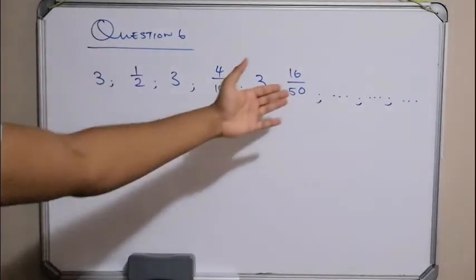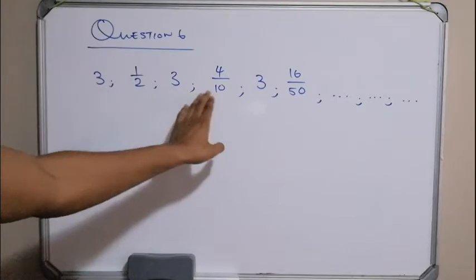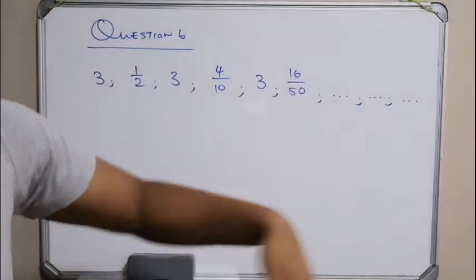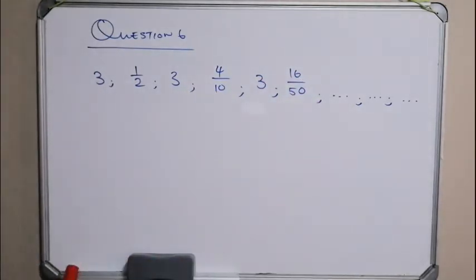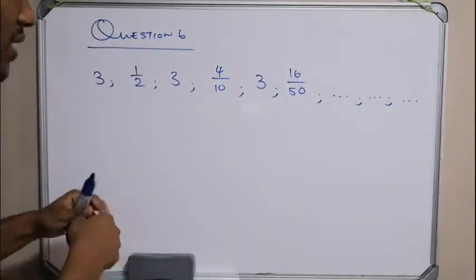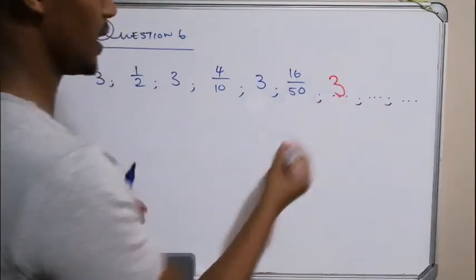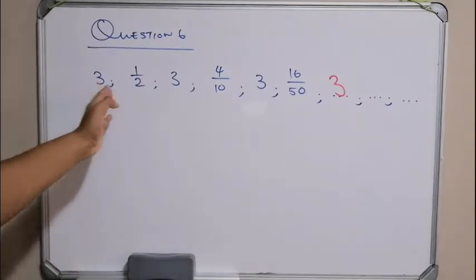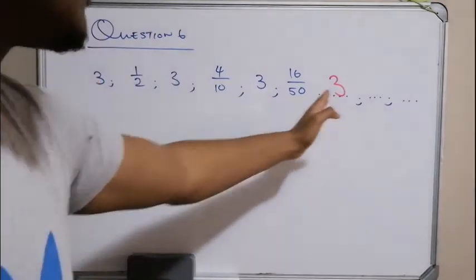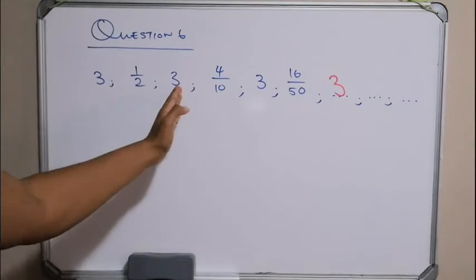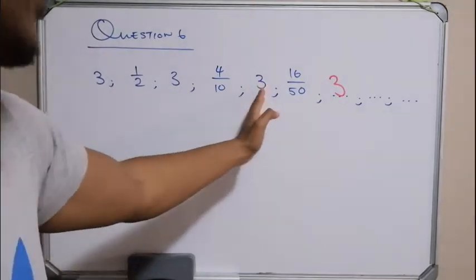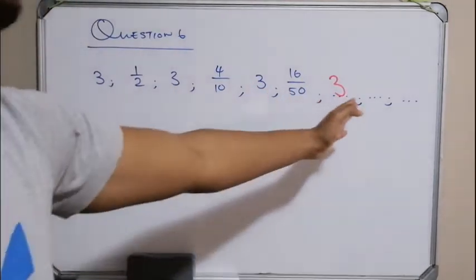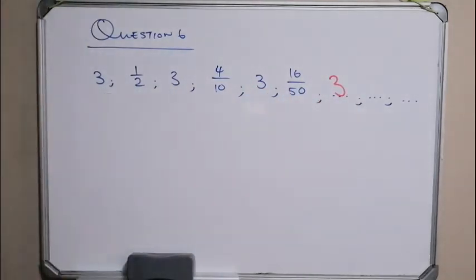This is a much more interesting pattern because 3, 3, 3, 3 — that's very trivial. We can just predict that the next term would be a 3. Every second term would be a 3. In fact, I would classify these as the odd terms, because this is term 1, term 3, term 5, term 7. These are all the odd terms and they are all 3s.